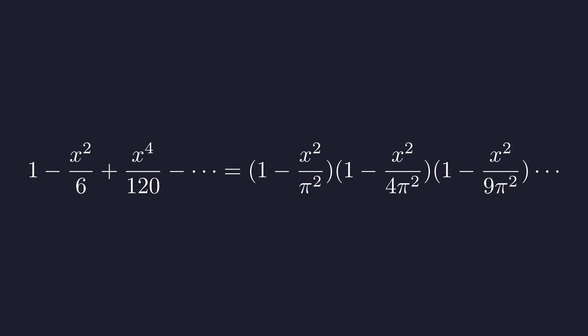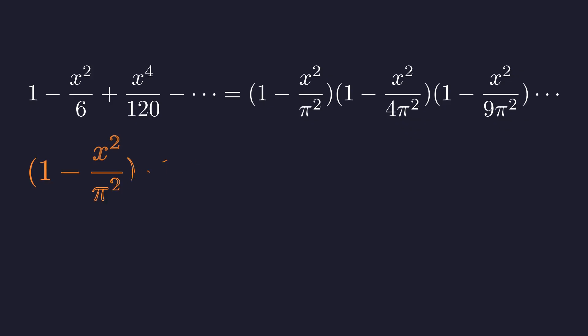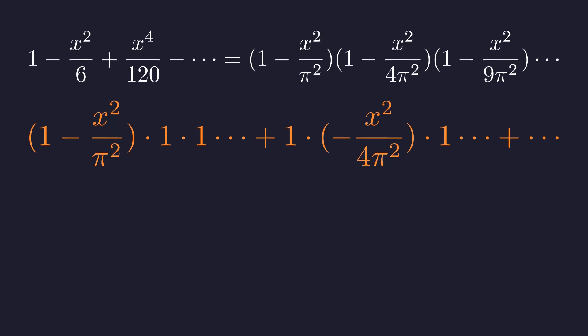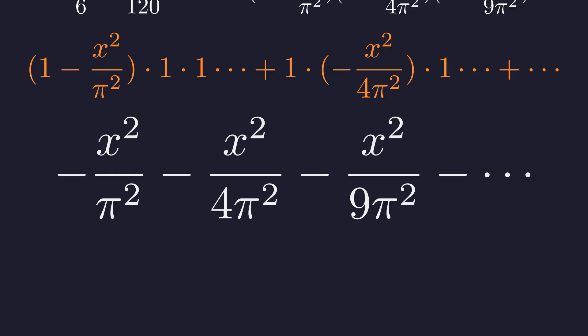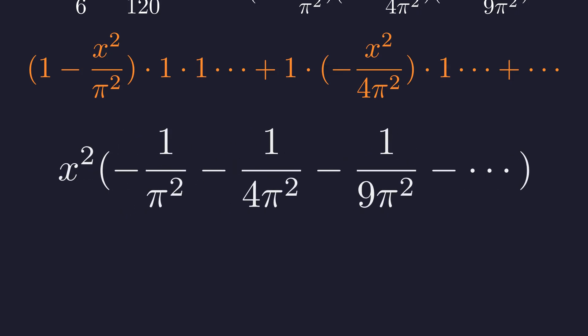Now for the interesting part, finding the x squared coefficient from the infinite product. How do we get an x squared term when we expand this? We get an x squared term by picking the x squared part from one bracket and multiplying it by the one from every other bracket. We do this for every bracket in the product. This gives us a sum of all the x squared terms. Now we factor out x squared to find the coefficient. So the coefficient of x squared from the product side is this sum in parentheses.